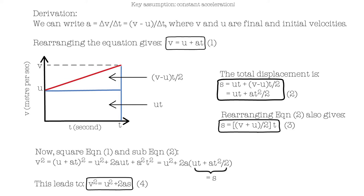As we know, SUVAT has five variables, where S is displacement, U is initial velocity, V is final velocity, A is acceleration, and T is time. We have a total of four SUVAT equations and each of them has four variables to work with. Each equation has one missing variable, which means that if you can gather three SUVAT variables, you can use the equations to find the unknown fourth value. Note that in SUVAT we also assume that air resistance is negligible, because if there were air resistance the acceleration would not be constant. These SUVAT equations will be provided in the formula booklets, so you don't necessarily need to memorize them. However, doing so can help with quicker recognition and save you time.